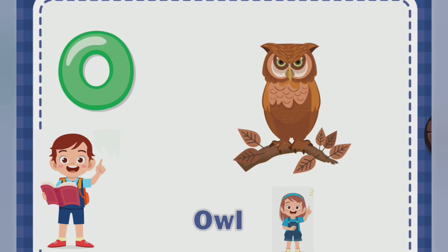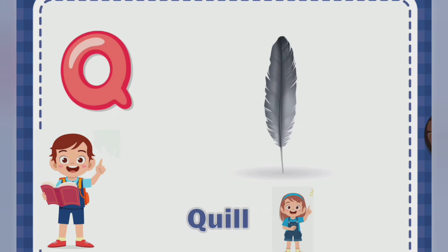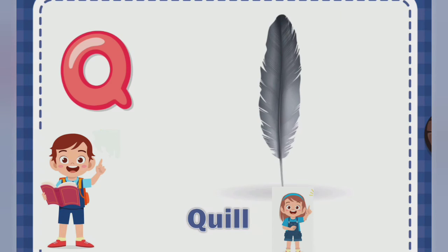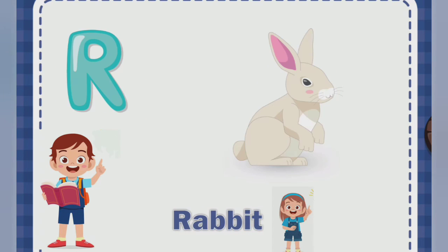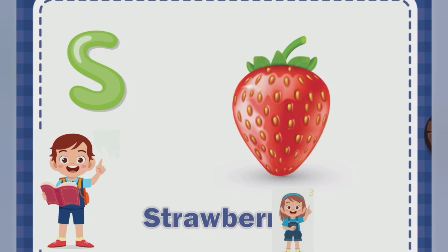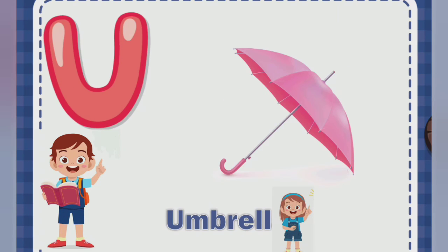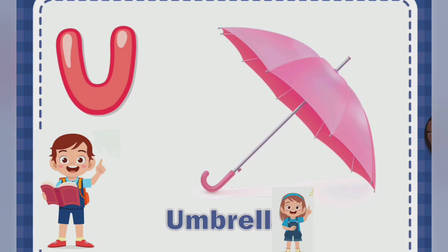O for owl, P for parrot, Q for quill, R for rabbit, S for strawberry, T for tiger, U for...